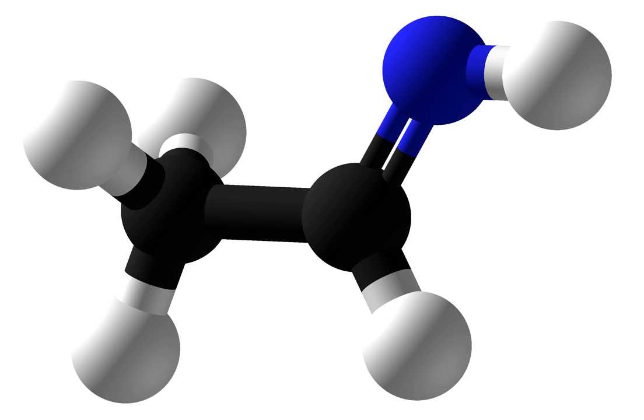It has two tautomers, ethynamine and aminoethylene. Ethenamine places the extra hydrogen on the carbon, while aminoethylene has it on the nitrogen atom.